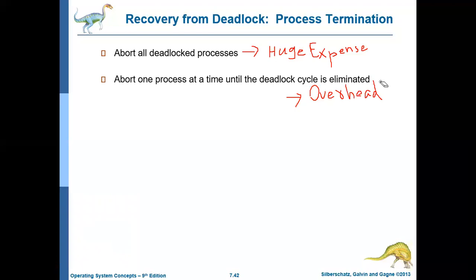To recover from the deadlock: the first method simply says just terminate all the processes, but it comes with a huge expense because the processes might have already executed for a long time and may have partially computed their results. So now they have to give up everything and all processes should restart. The second method says abort one process at a time until the deadlock cycle is eliminated. But this method comes with overhead in that after aborting each process, the deadlock detection algorithm should be executed again and again to find if there is still some process in deadlock or not.